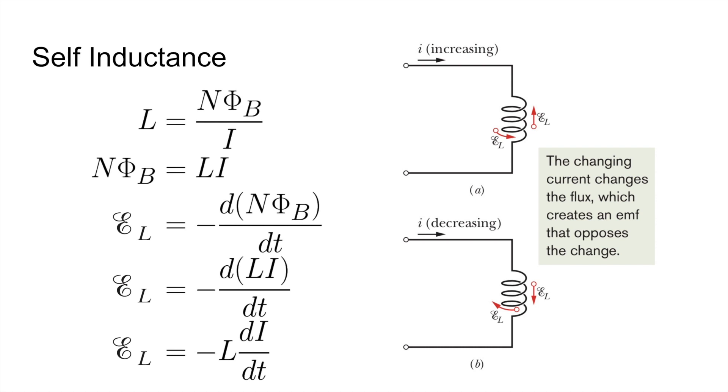If we plug it in into the second equation, we get the induced EMF is negative the change of LI over dt. And if we simplify that, we get the induced EMF is negative L times dI over dt. This is an important equation to remember and know how to derive.